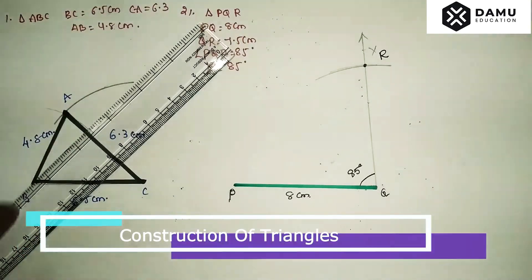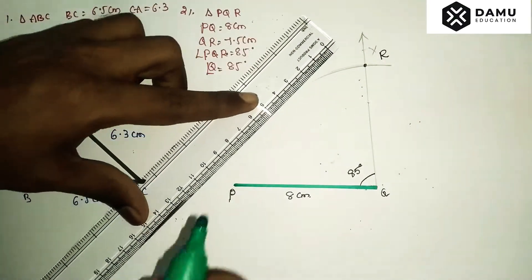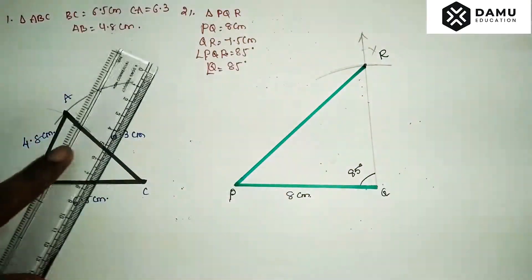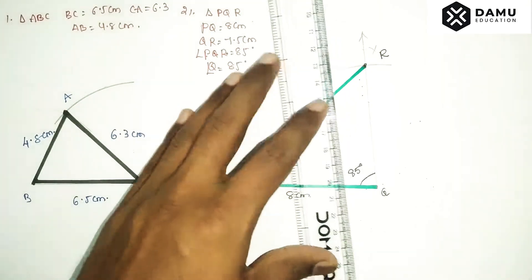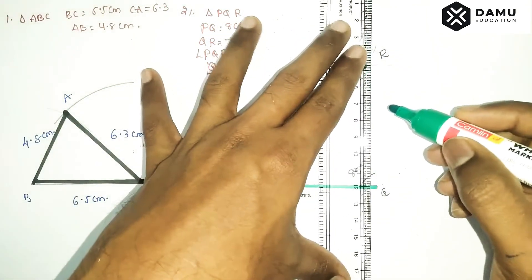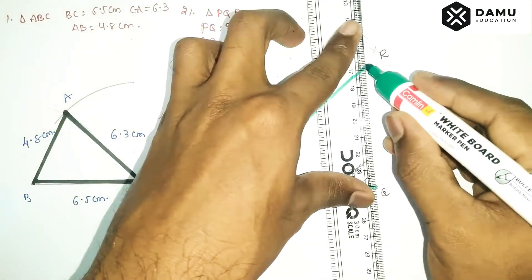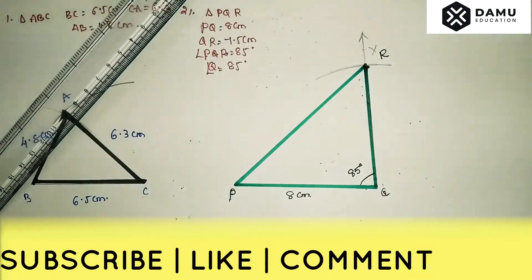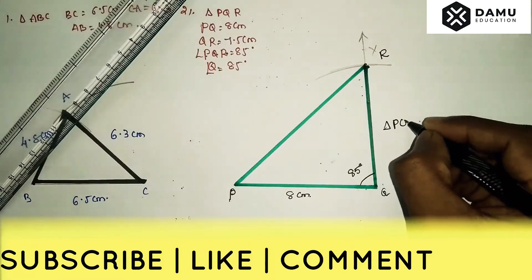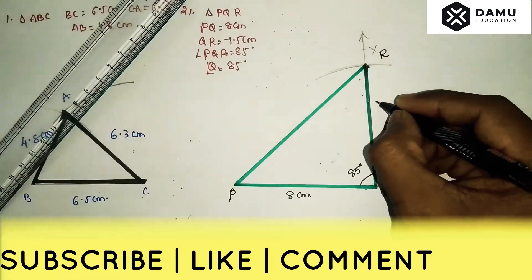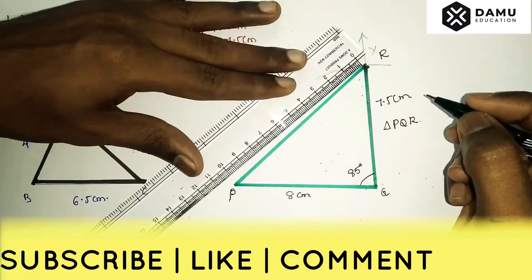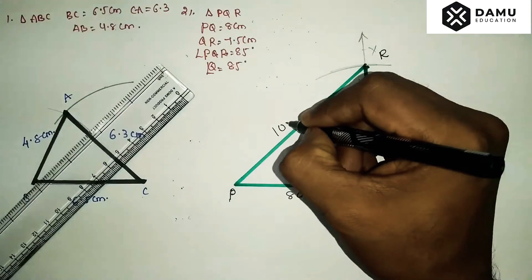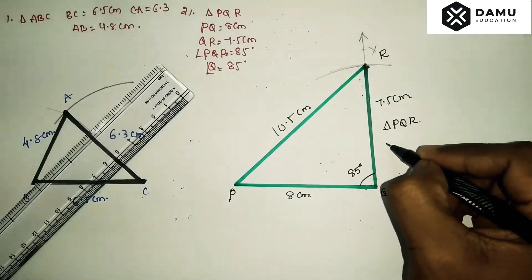Join PR and QR to complete the triangle. We have constructed triangle PQR. The measurements are QR equals 7.5 cm, and if we measure PR, this is around 10.5 cm.